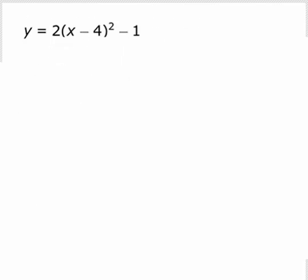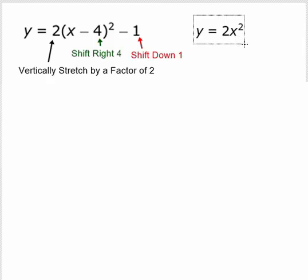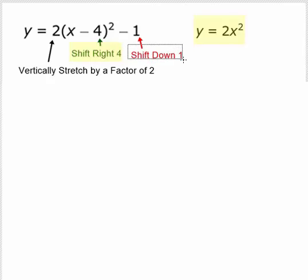Here is our first function: y equal 2 times x minus 4 quantity squared minus 1. This will be a shift of y equal 2x squared. We have taken the function y equal 2x squared and replaced x with x minus 4, which shifts it to the right 4. We have subtracted 1 from the formula, which shifts it down 1.